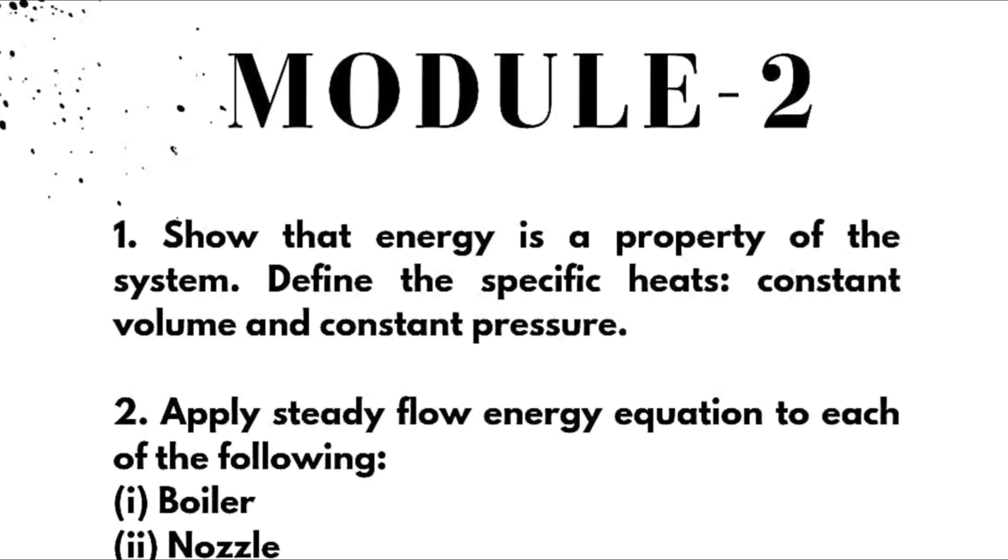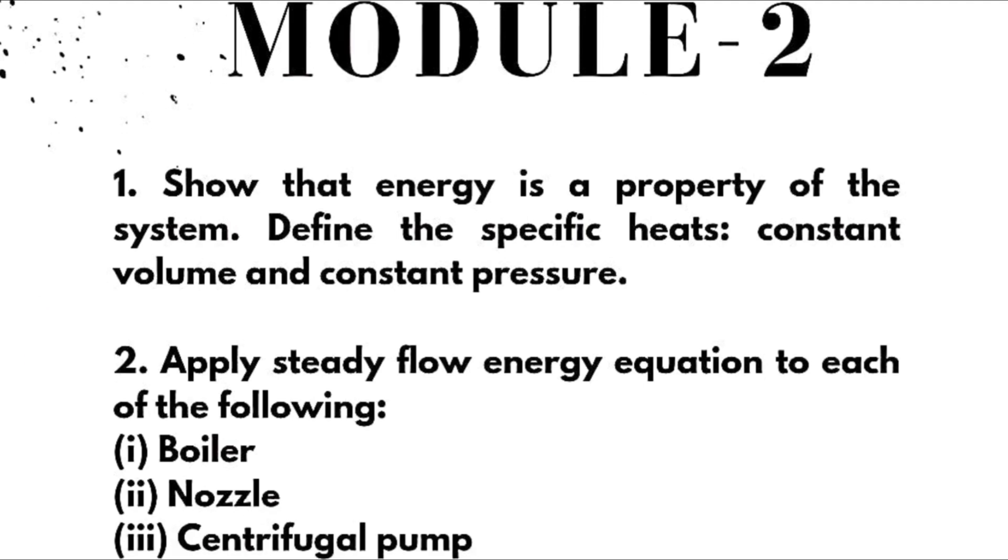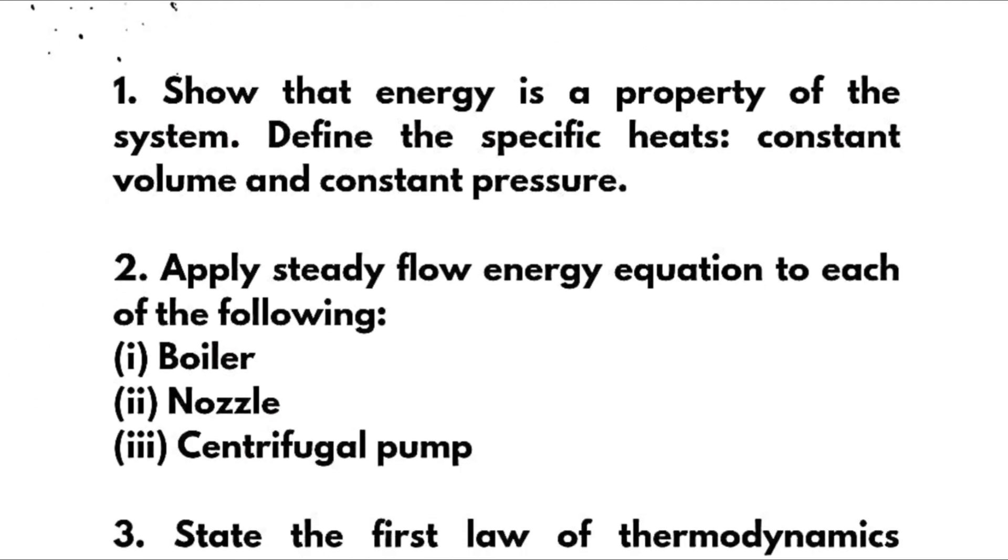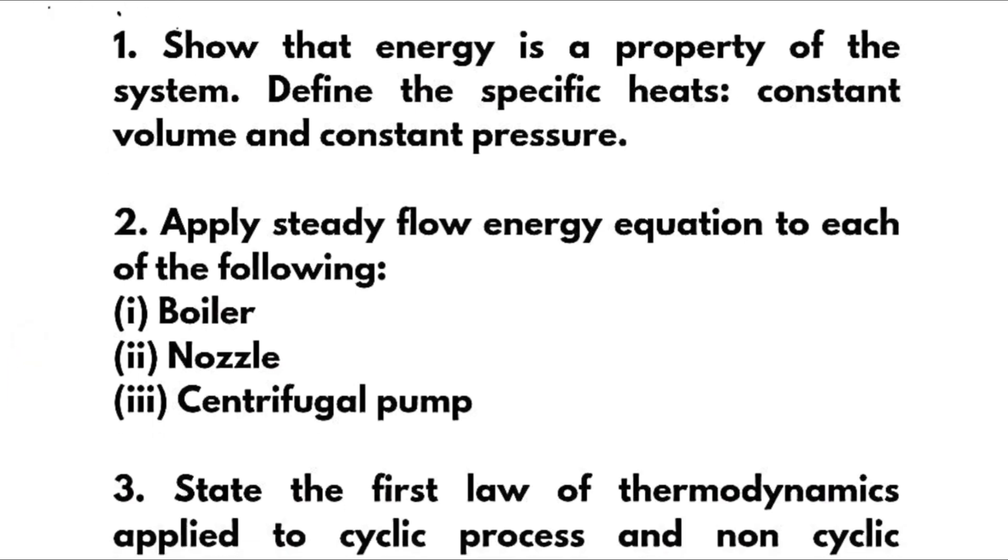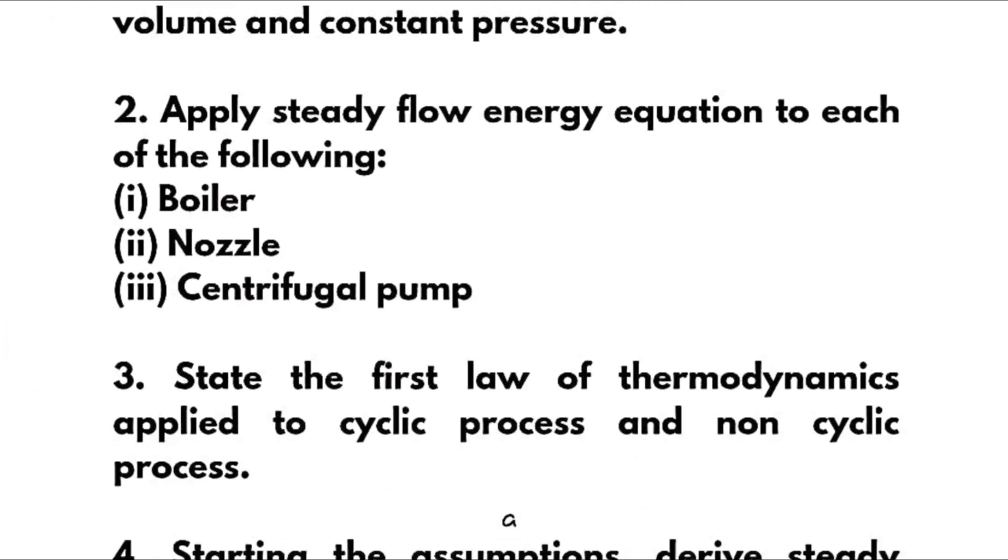Now coming to Module 2, we have the most important question: show that energy is a property, or sometimes show that internal energy is a property of the system. Define the specific heats at constant volume and constant pressure. Apply steady flow energy equation to each of the following: boiler, nozzle, and centrifugal pump.